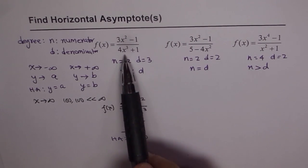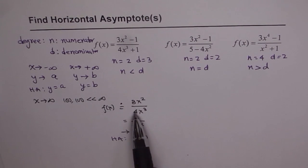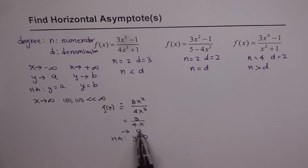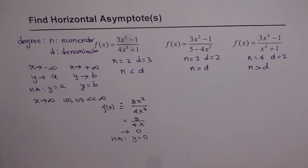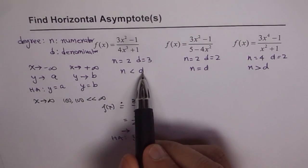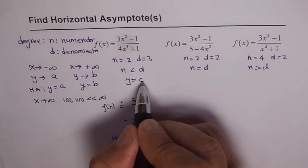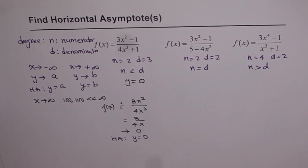In general, if the degree of the denominator is higher, it does not really depend on the specific coefficients — if the denominator degree is higher, you are approaching 0 and the horizontal asymptote is y equals 0. So whenever the numerator degree is lower than the denominator degree, the horizontal asymptote equation is always y equals 0.